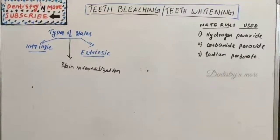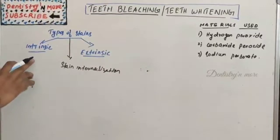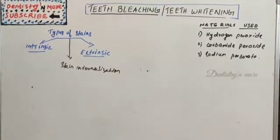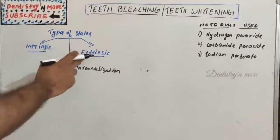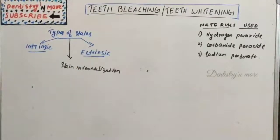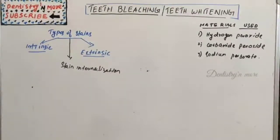There are many causes for intrinsic staining: metabolic, inherited, iatrogenic, traumatic, idiopathic, and aging causes. Extrinsic staining is related to diet, bacterial stains, gingival hemorrhage, chlorhexidine stain, and tobacco stains. Stain internalization can occur due to dental caries, gingival recession, and tooth wear.